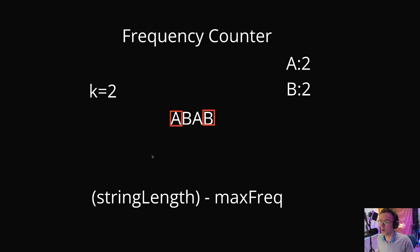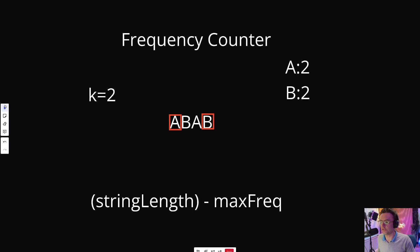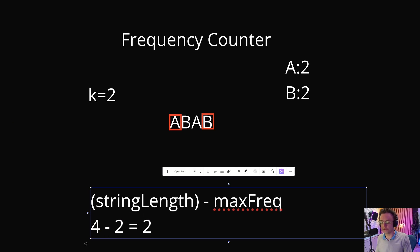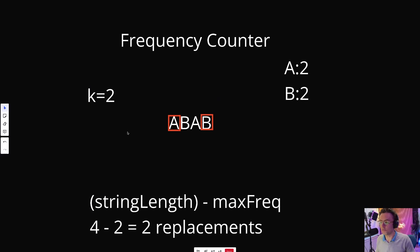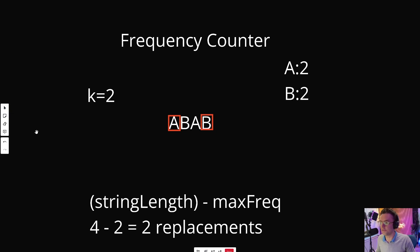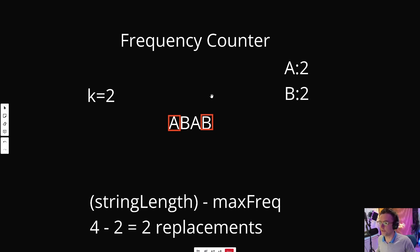We use simple math: take the current string length and subtract the maximum frequency. Here the maximum frequency is 2, the string length is 4, so 4 minus 2 equals 2 — the number of replacements needed. If that number exceeds K, we can't do the replacement; if it's less than or equal to K, we can. Four minus two equals two, and K equals two, so we can do the replacement. But currently this approach is quadratic. How do we make it linear?